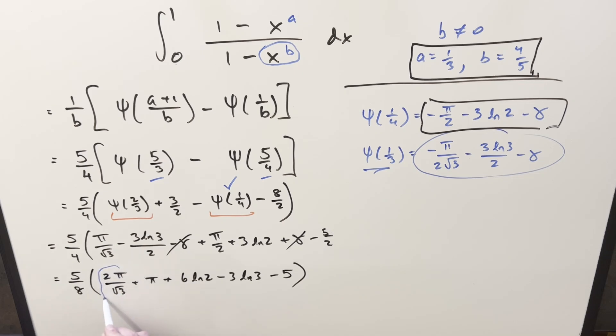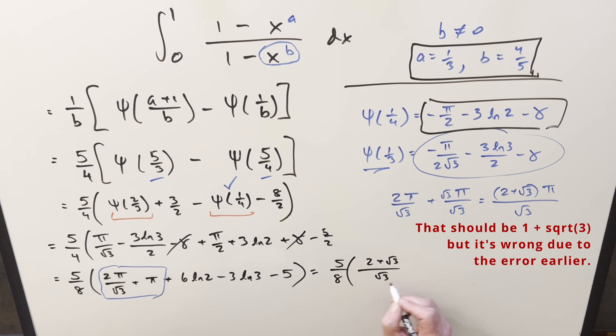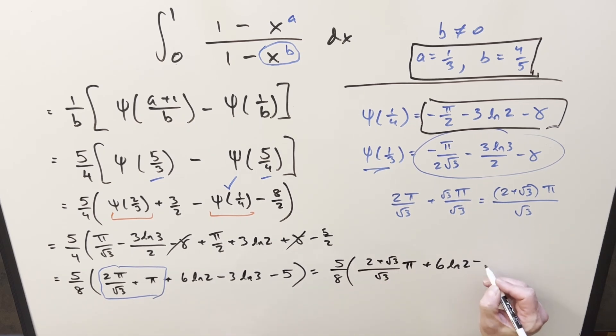But then let's just put these two terms together, get a common denominator. So doing that, we can write this as 2π over square root of 3 plus square root of 3 times π over square root of 3. I'll factor a π out and put these together. We'll have (2 + square root of 3) over square root of 3. So we'll take this and put it back. So for my final solution is we just have 5/8 times (2 + square root of 3) over square root of 3 times π plus 6 ln 2 minus 3 ln 3 minus 5. And that's it.